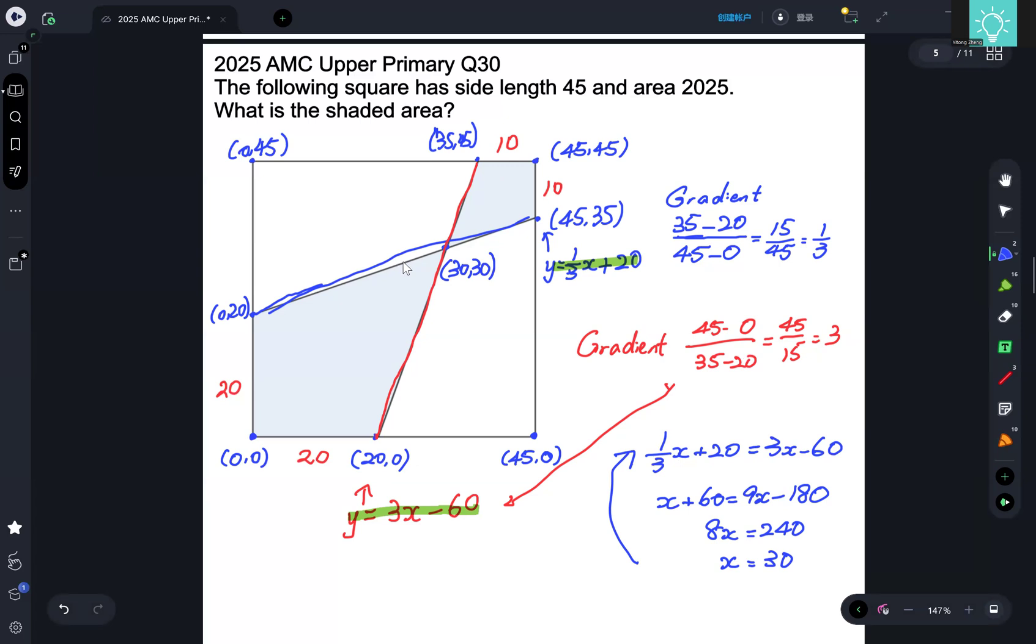Now, how is this useful? Because this is on the line x equals to y, we know that we can draw a straight line right through the diagonal, and it's going to go through this point.